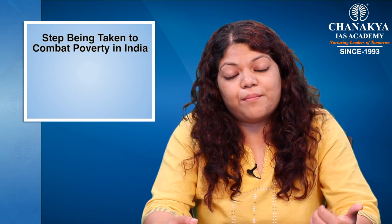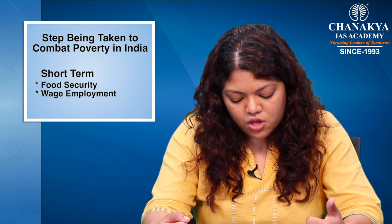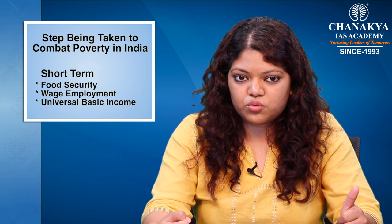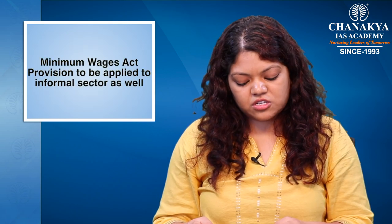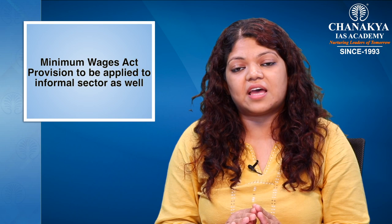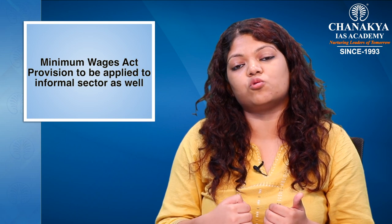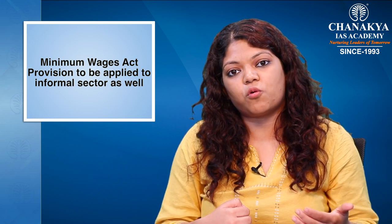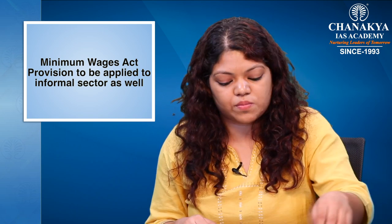Short-term measures to combat poverty include food security through the PDS system, wage employment as done under the NREGA scheme, and universal basic income for those who are deeply marginalized. Another suggestion is that the Minimum Wages Act should be applied to the unorganized and informal sector as well, since many types of employment are excluded. Many people don't even get the minimum wage and there is no law to enforce it — the Economic Survey also talks about this.